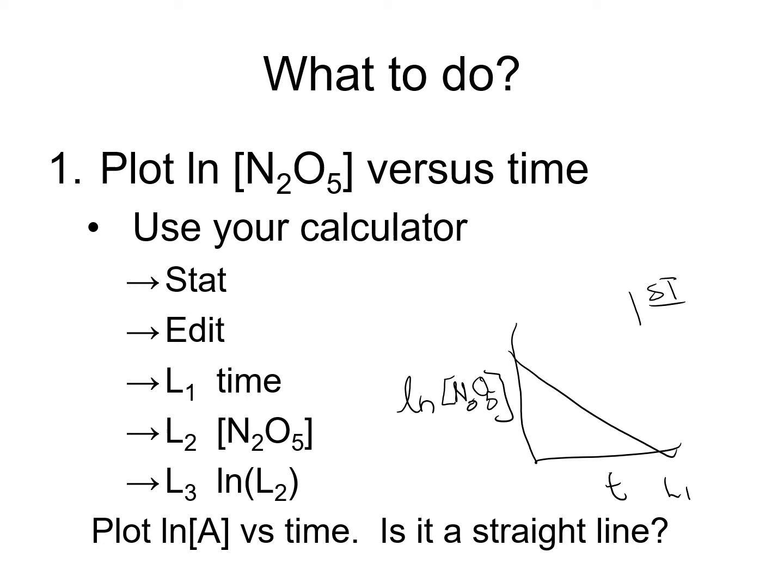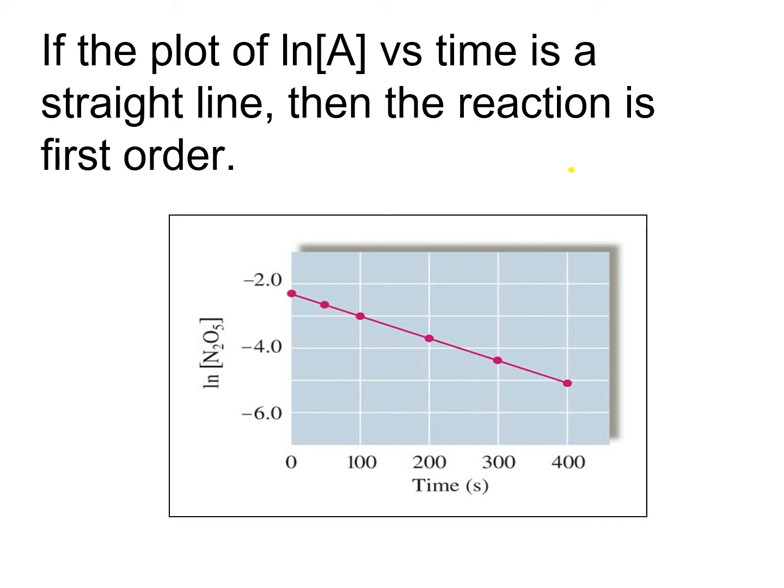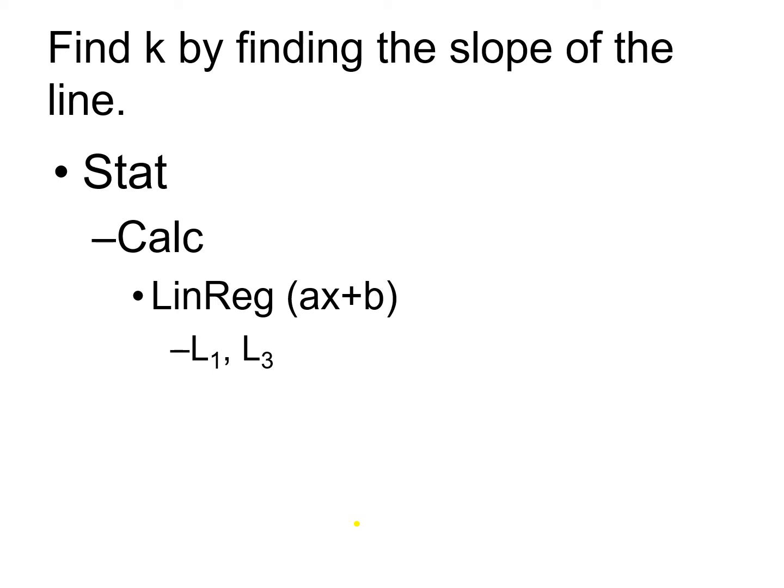Once you have a straight line, you can calculate the slope. You should have something that looks like this graph from the book. Now let's calculate the slope. In your calculator, go to stat, calc, select linear regression. We have our time in L1 and our natural log in L3, so make sure you choose the proper list for your calculation. K is going to be equal to the negative of that.